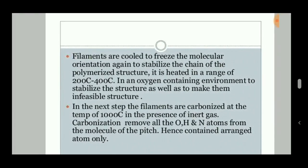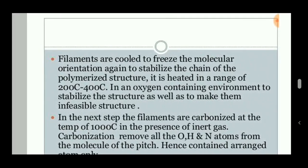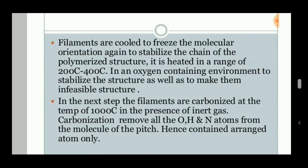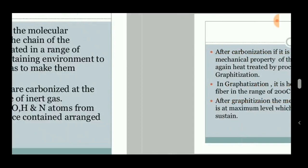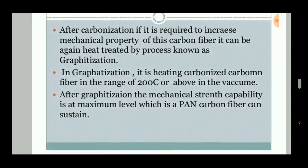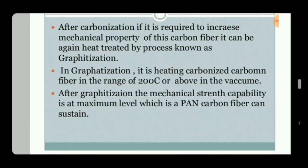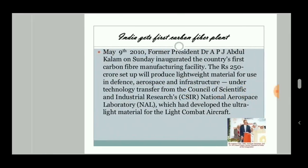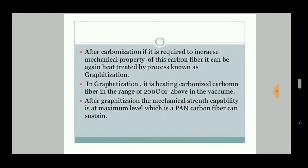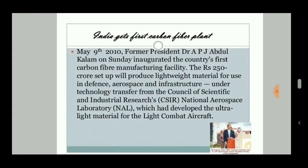The filaments are cooled and oriented again to stabilize the polymerized chain structure; they are heated in a range of 200 to 400 degrees Celsius. The filaments are then carbonized at a temperature of 1000 degrees Celsius. The removal of oxygen and hydrogen — the carbonization process — takes place. Finally, the graphitization process takes place by heating the carbonized compound above 2000 degrees Celsius, and thus the carbon fiber is produced.